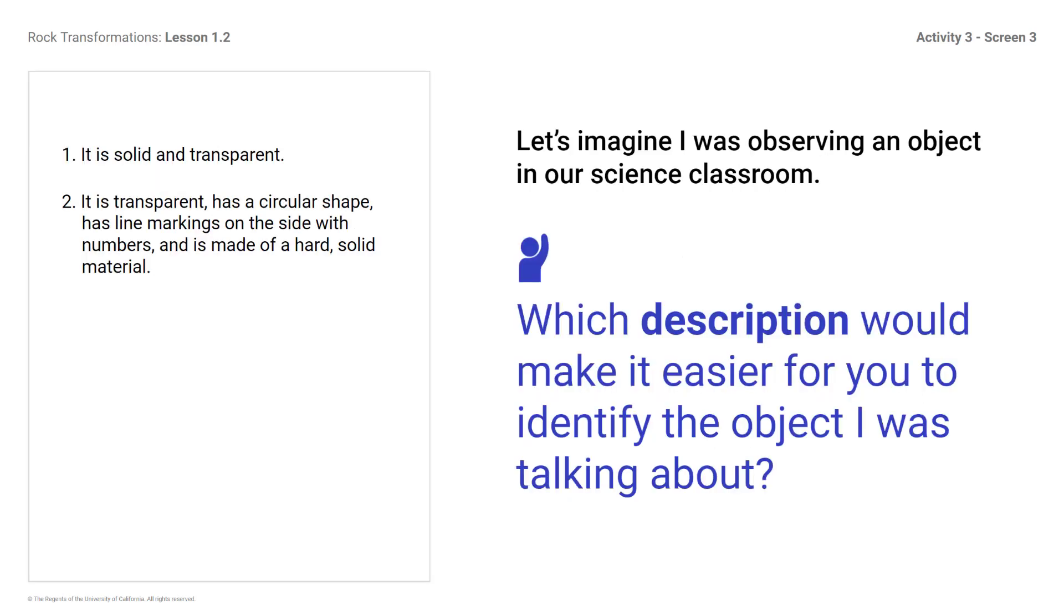It is solid and transparent. It is transparent, has a circular shape, has line markings on the side with numbers, and is made of a hard, solid material. Let's imagine I was observing an object in our science classroom. Which description would make it easier for you to identify the object I was talking about? The second description. From that description, I might guess that you were talking about a beaker or a cylinder. From the first description, you could be observing anything in the classroom that is transparent, such as a window or piece of glass.